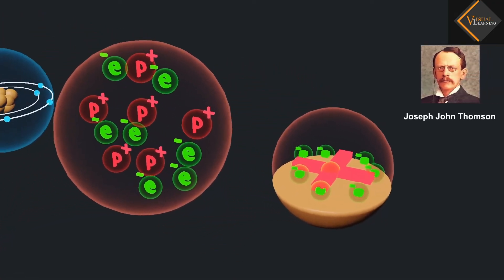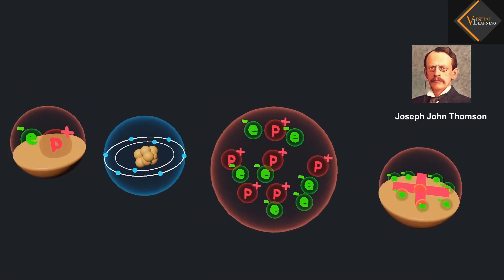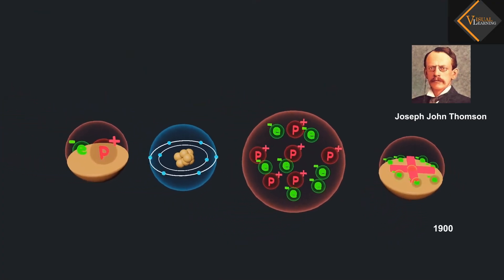Joseph John Thomson was the first one to propose a model for the structure of an atom in the year 1900.